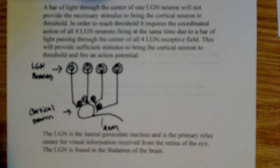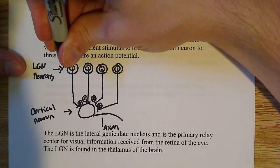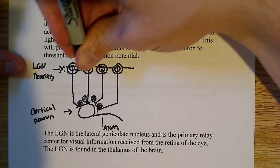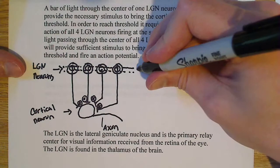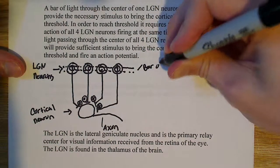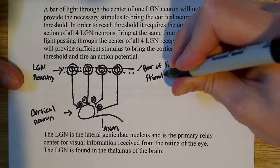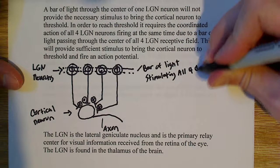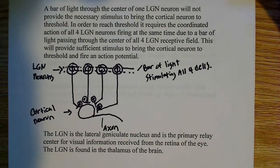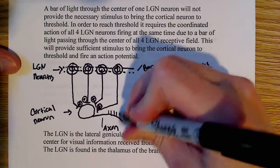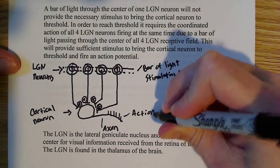There's an excitatory stimulus there, and then I'm going to show my bar of light. My bar of light has to cross right through the center — I'm going to use a dotted line crossing directly through the center. So this right here is my bar of light, and notice that it's stimulating all four cells. That's one of the big issues here. A bar of light through the center of the LGN neurons will provide the necessary stimulus to bring the cortical neuron to threshold, and once it's at threshold the action potential is an all-or-nothing process — so this is going to fire action potentials.